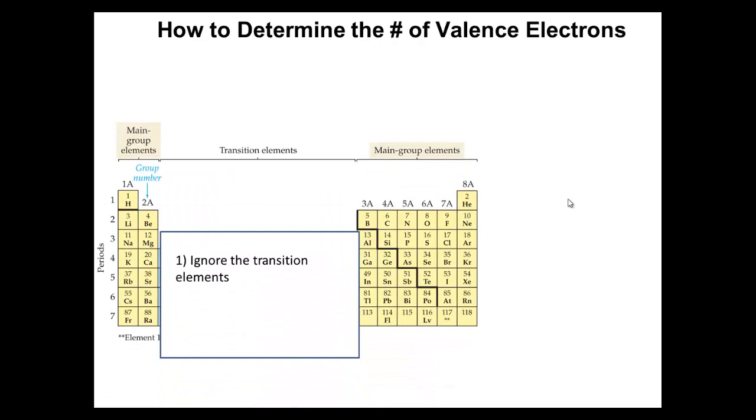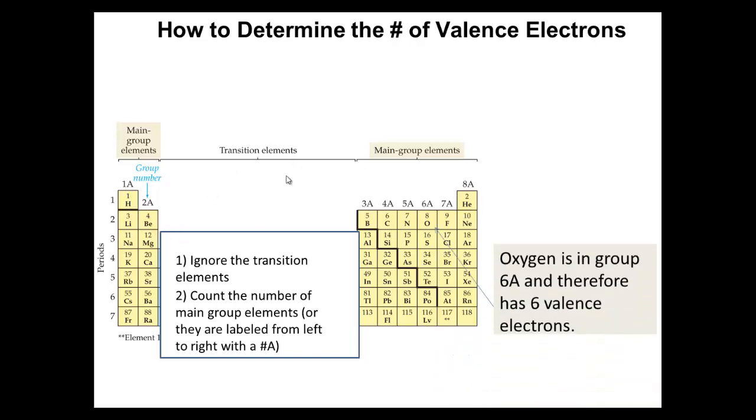So I'm going to show you with the elements in the periodic table. So again, you're going to ignore the transition elements, not just because you can't predict them as easily as you can the main group. So again, the second step is to either you can use the group number, or you can actually count. You can go one, two, three, four, like that. So, for example, oxygen is in 6A, and therefore it has six valence electrons. Another example would be magnesium. Magnesium has two valence electrons because it's in the group number 2A.